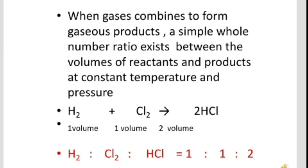For example, 1 volume of hydrogen combines with 1 volume of chlorine to form HCl. The ratio of reactants hydrogen:chlorine:product HCl is 1:1:2 — a simple whole number ratio.